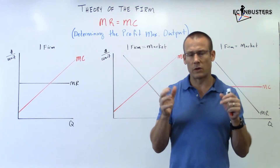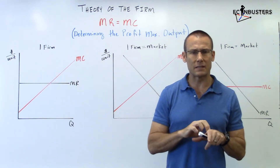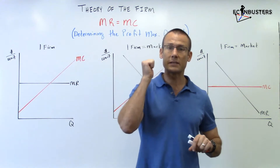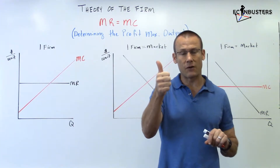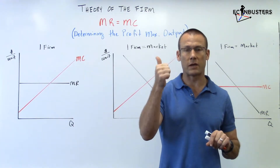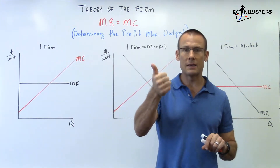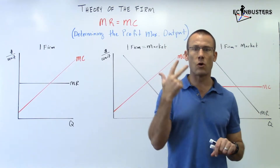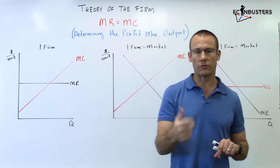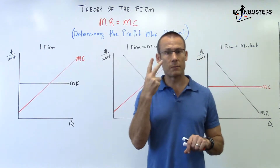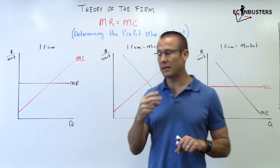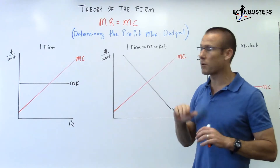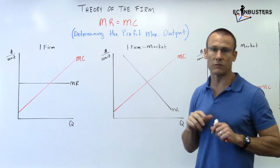Let me say it in a slightly different order. I usually say Demand first because Demand is key to defining the MR. So Demand, MR, MC — those three curves. MR equals MC is the key to finding the profit maximizing level of output.